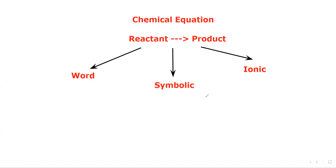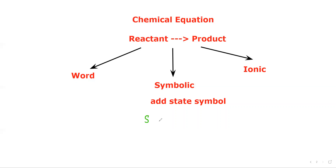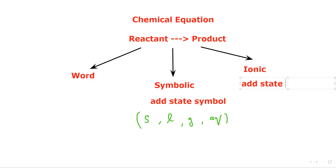When writing a symbolic or ionic equation, we can also add state symbols. State symbols indicate the physical state of each substance. If a substance is solid, we write (s); if liquid, (l); if gas, (g); and if dissolved in water, we write aqueous (aq). State symbols are added for symbolic and ionic equations, but we do not write any state symbol for word equations.